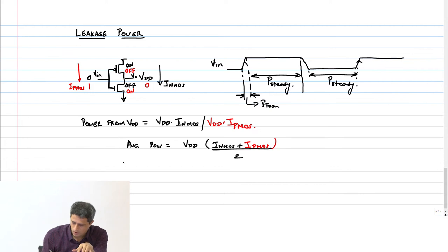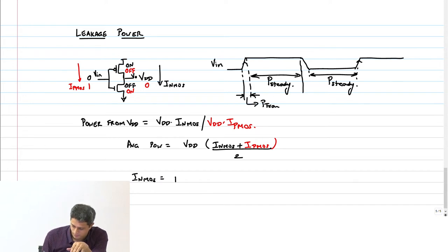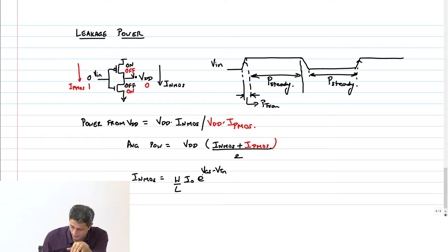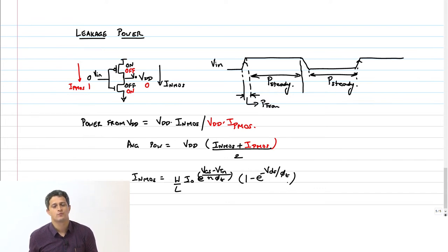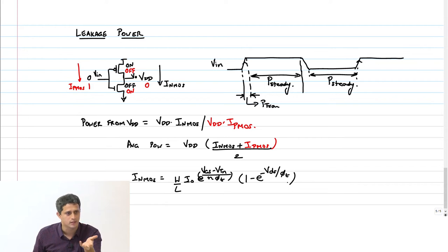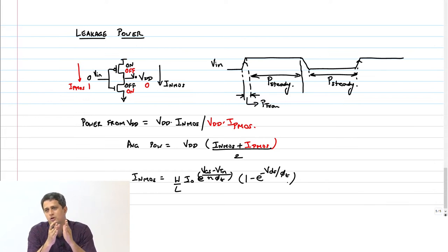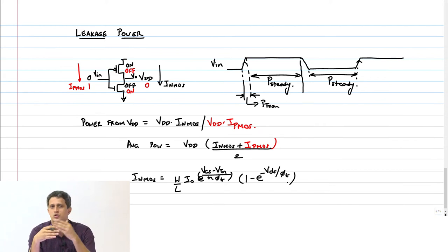The leakage current equation is: (W/L) × I₀ × e^((V_GS − V_TN) / N·φ_T) × (1 − e^(−V_DS / φ_T)). How do I reduce this leakage power? Remember, this is what kills your battery — your phone is doing nothing, but power is still being drawn from the battery. When it is idle, if I can reduce this power it is very helpful.